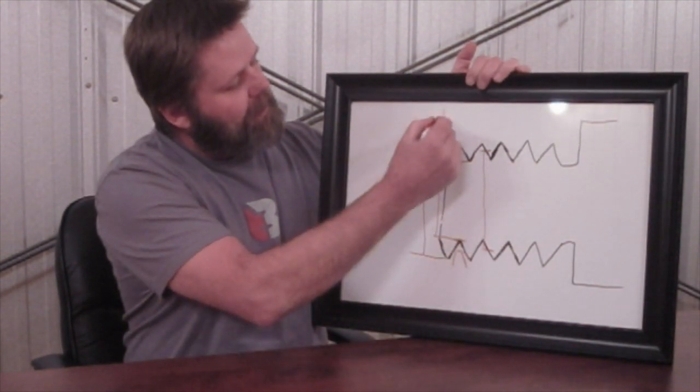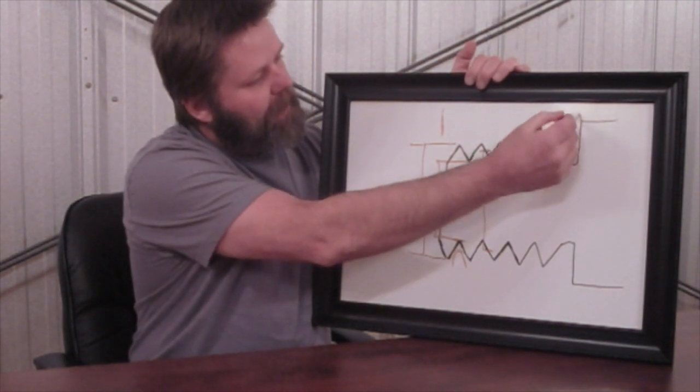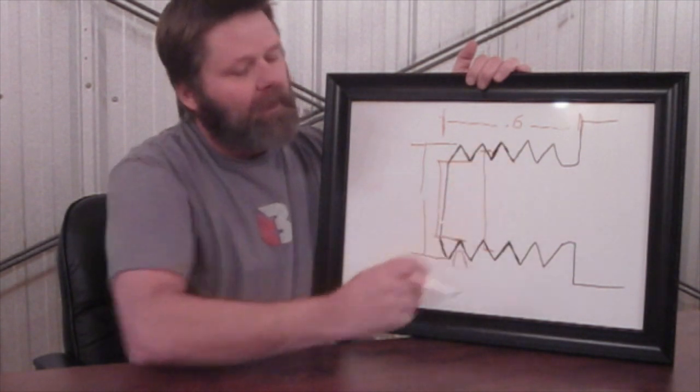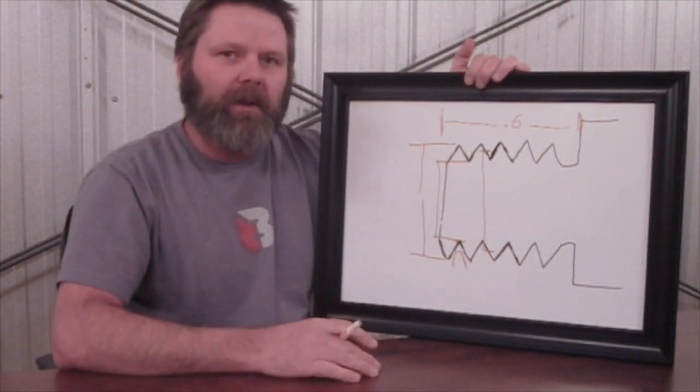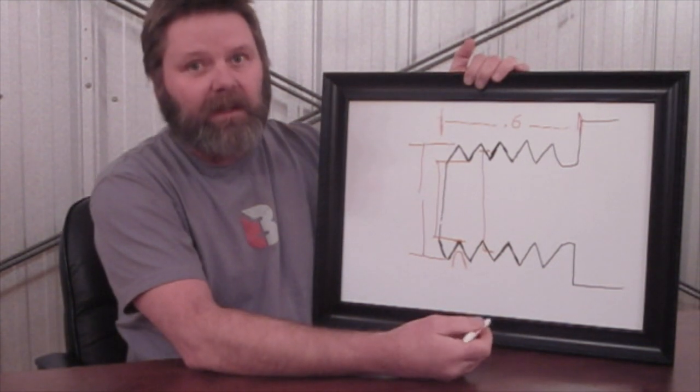We'll talk about those more here in just a second. One of the other things you want to be concerned with is thread length. So from the end of the thread to the shoulder, back here, on a centerfire, it should be .6. It doesn't matter if it's a .223 or a .300 Win Mag. Any centerfire gun,